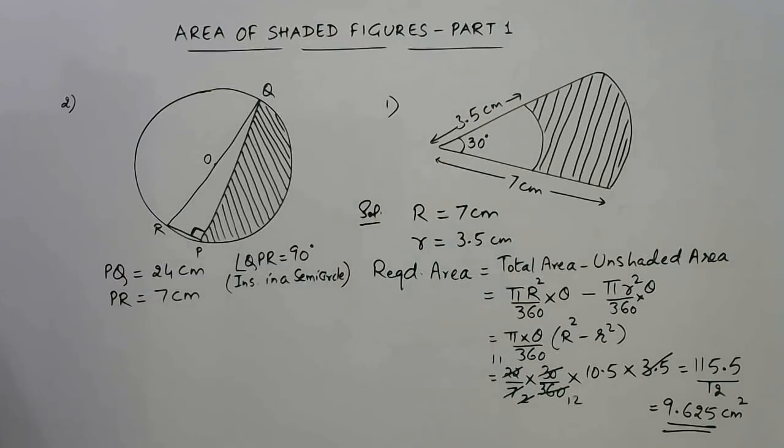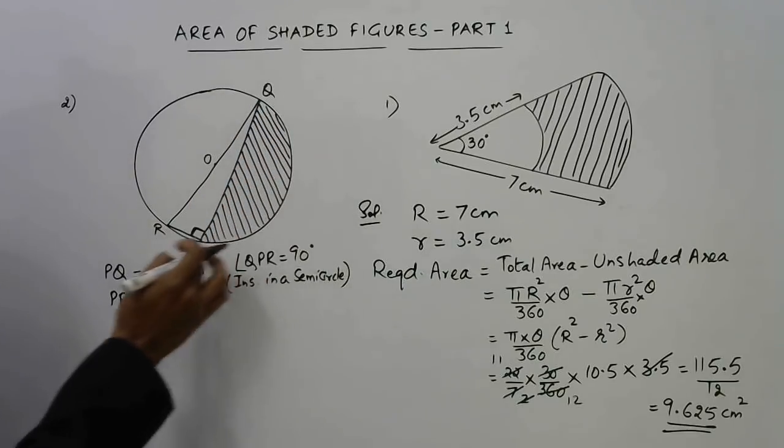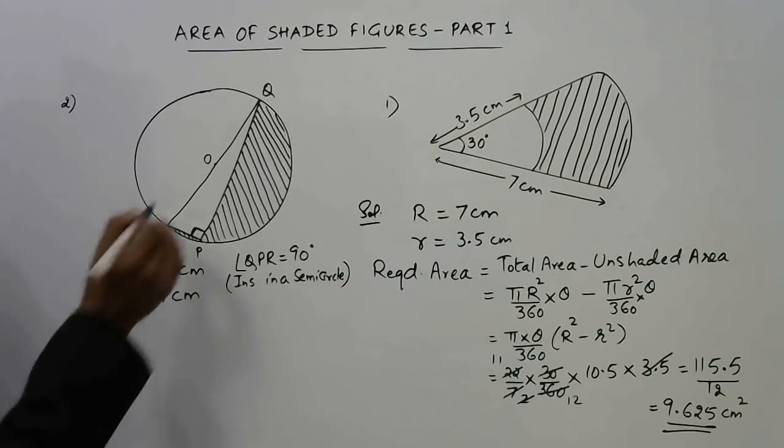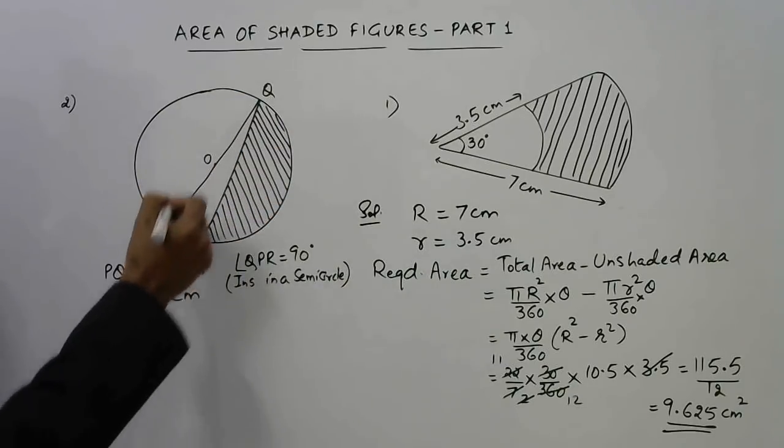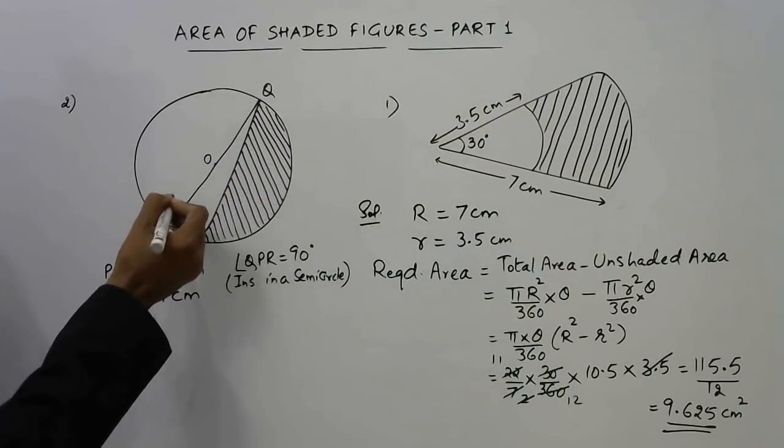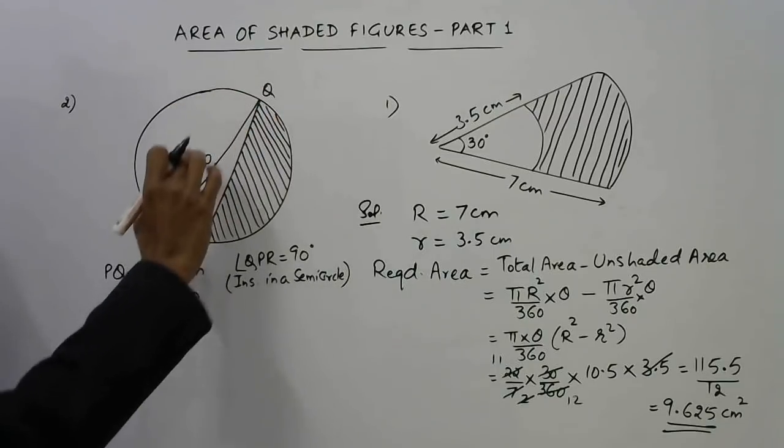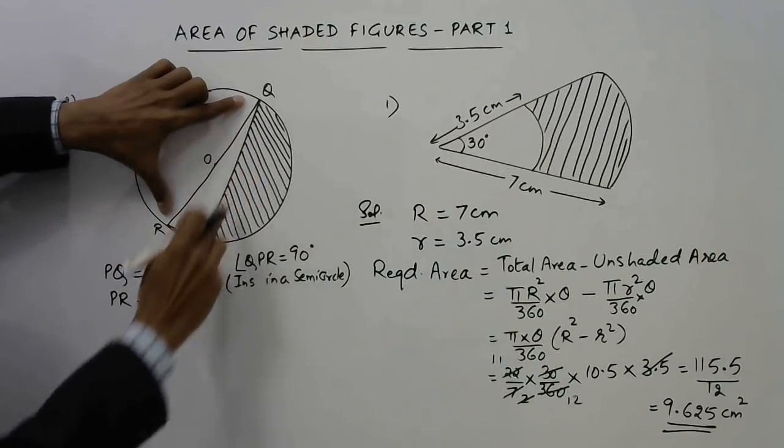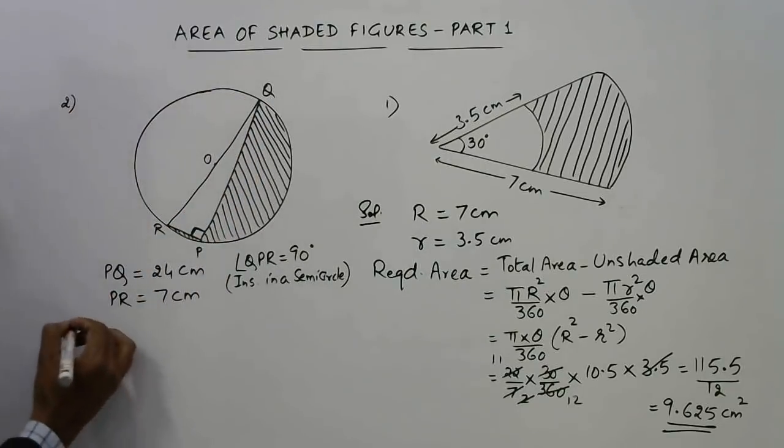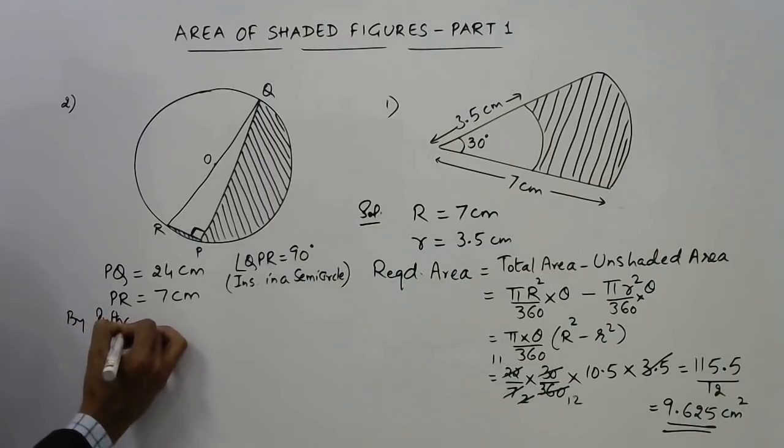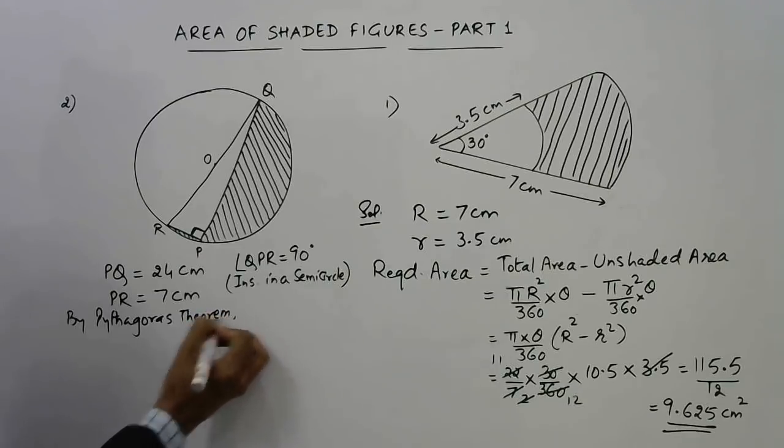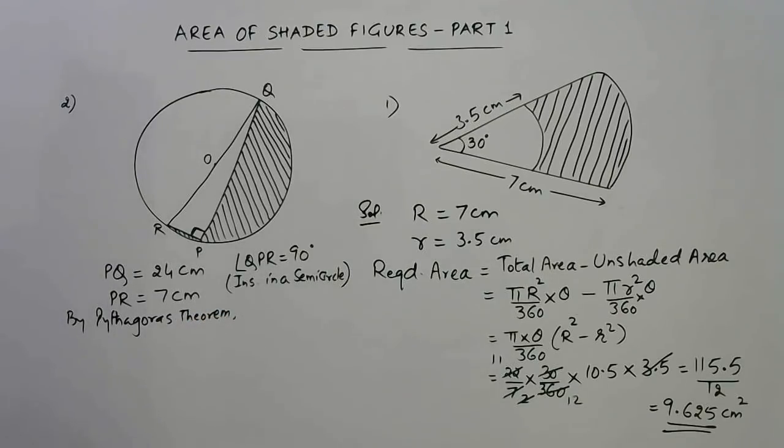We need to use this concept here. To find the area of the semicircle, we need the radius, and radius is half of the diameter. So we will find out the diameter first using these two sides which are the sides of a right triangle. So we will use Pythagoras theorem. These are the concepts you need to identify yourself.